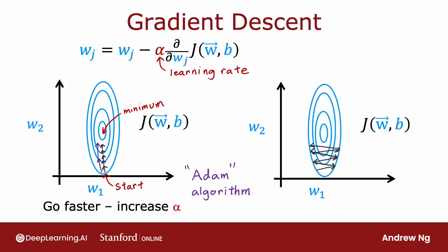well, why don't we make the learning rate smaller? And the Adam algorithm can also do that automatically. And with a smaller learning rate, you can then take a more smooth path toward the minimum of the cost function.